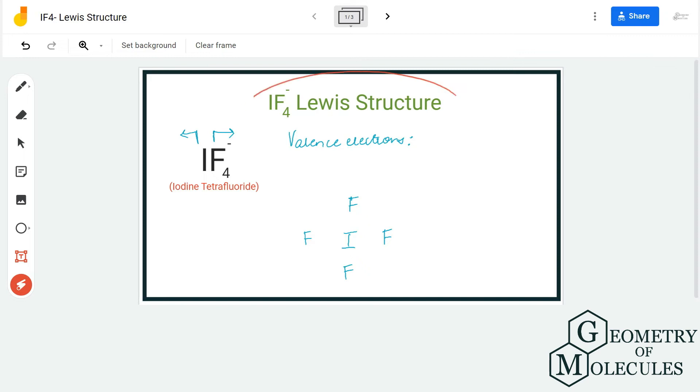Hi guys, today in this video we are going to determine the Lewis structure for IF4-. It is also known as iodine fluoride ion because it has a negative charge over here. This is an ion.